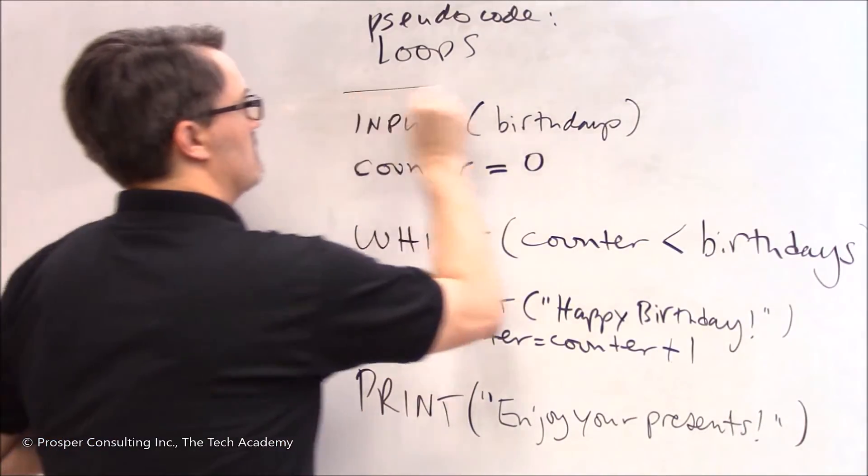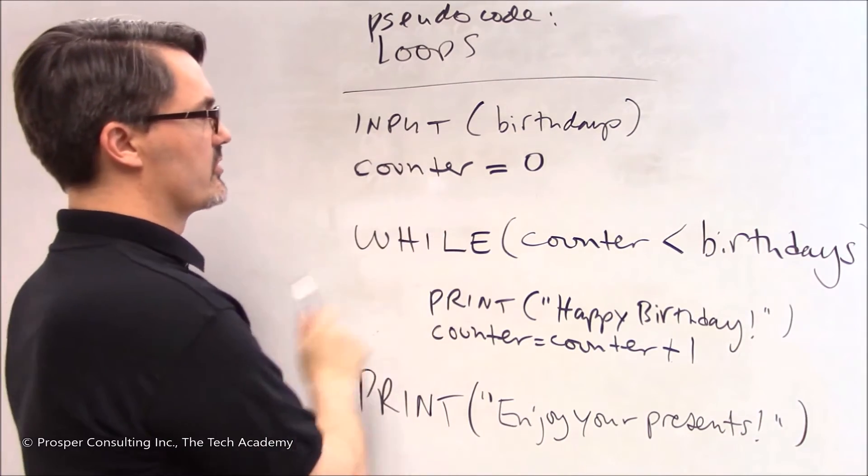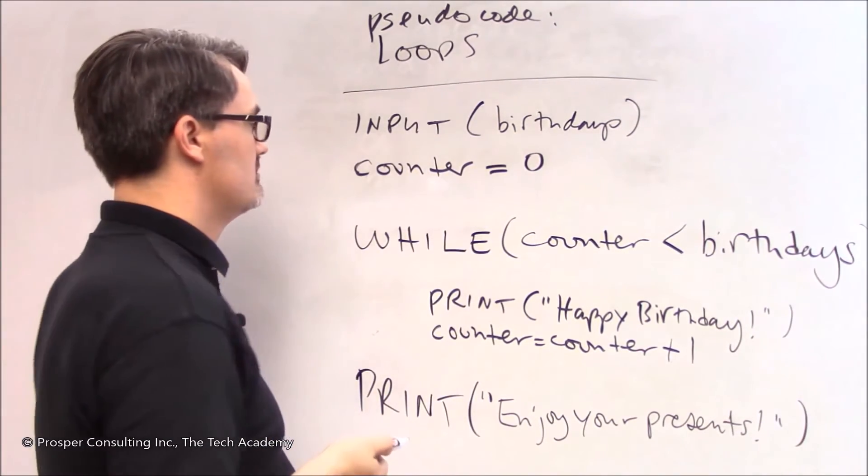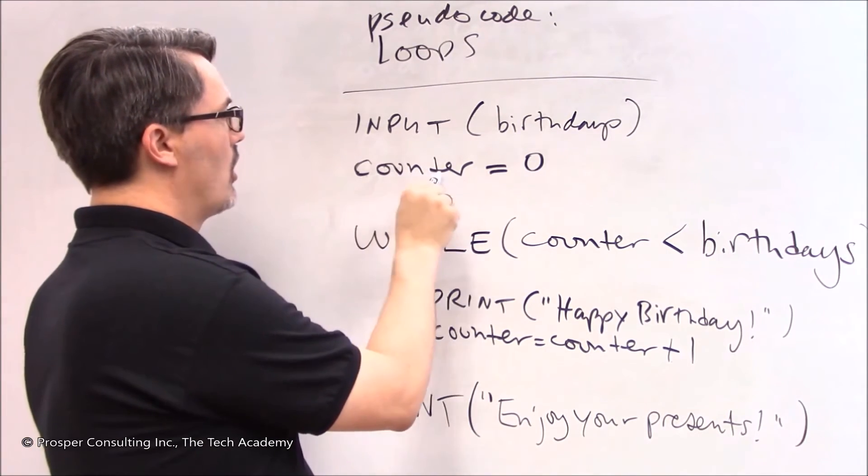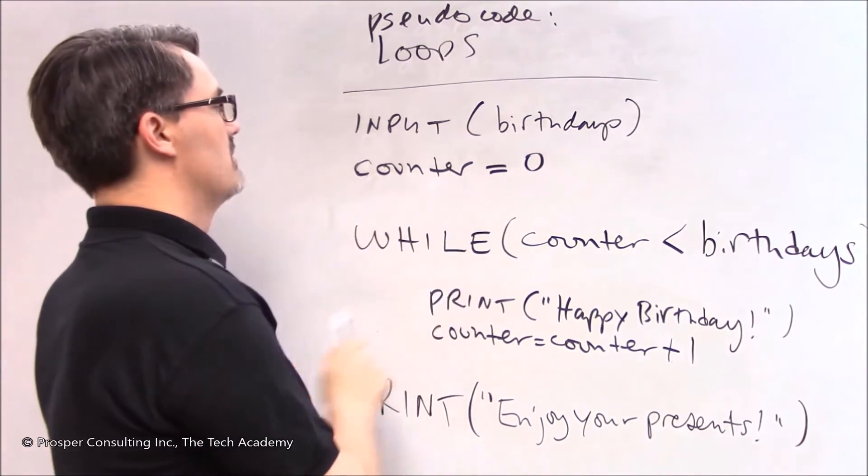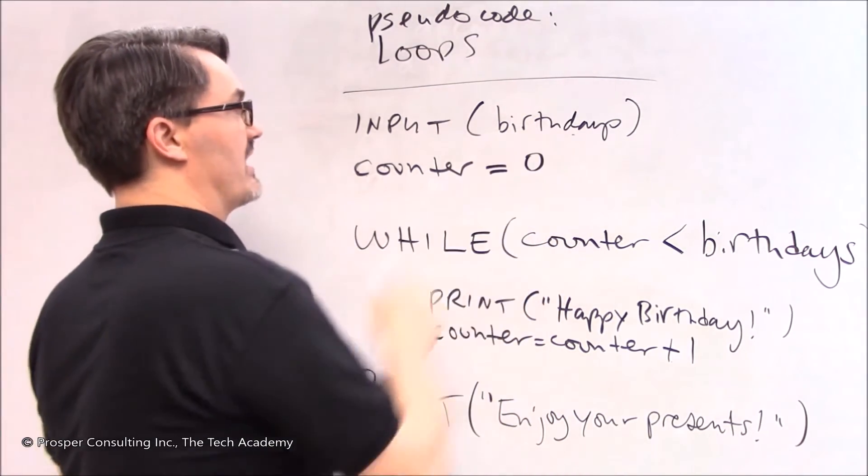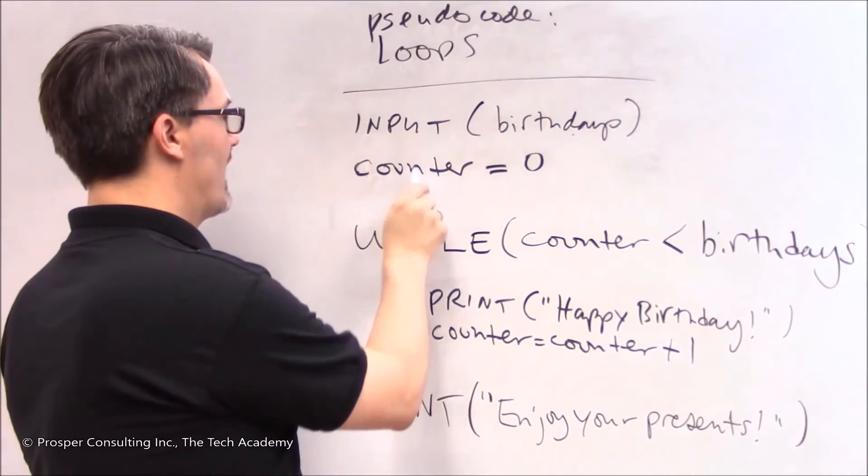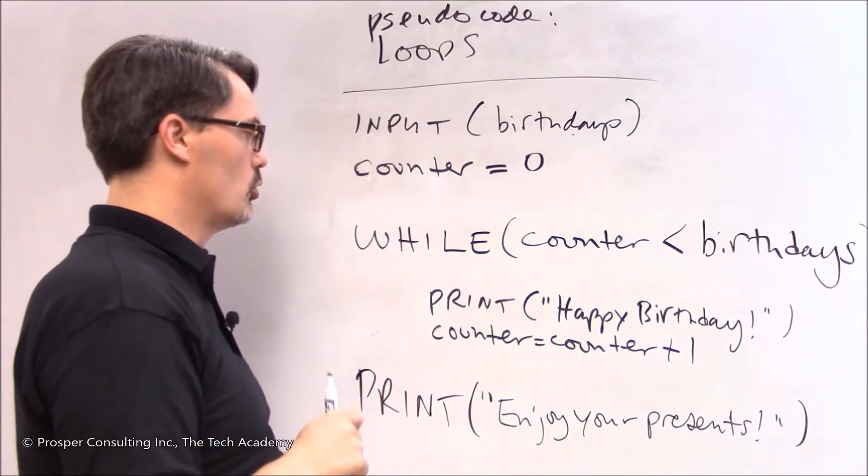Let's look at a pseudo code example of that. Here is a computer program. First we ask for input from the user. They tell us how many birthdays they have. Then we create a variable called counter and we set it to equal zero. We have two variables now. We have birthdays that the person entered and we have counter that the program has set up initially to be zero.